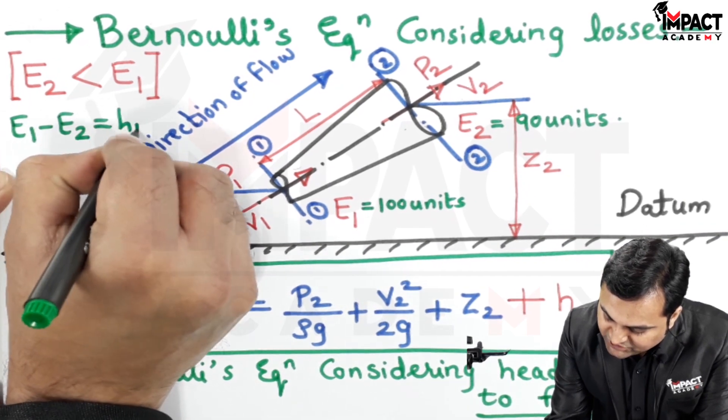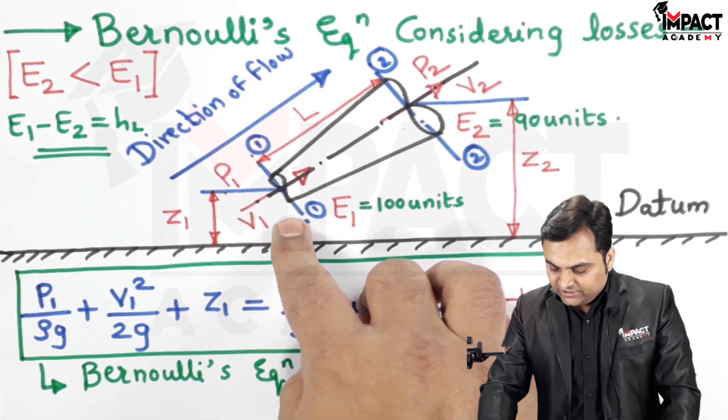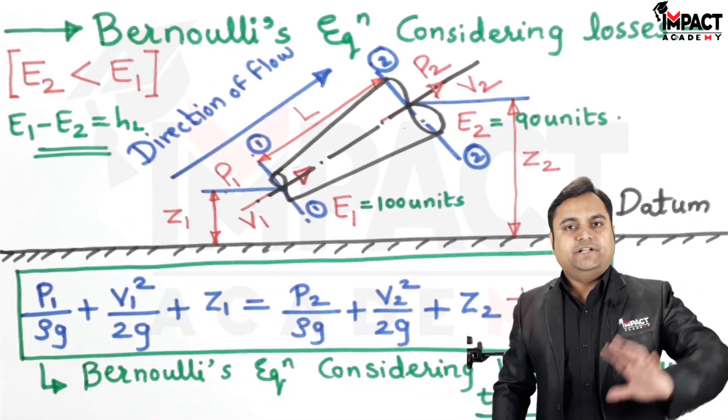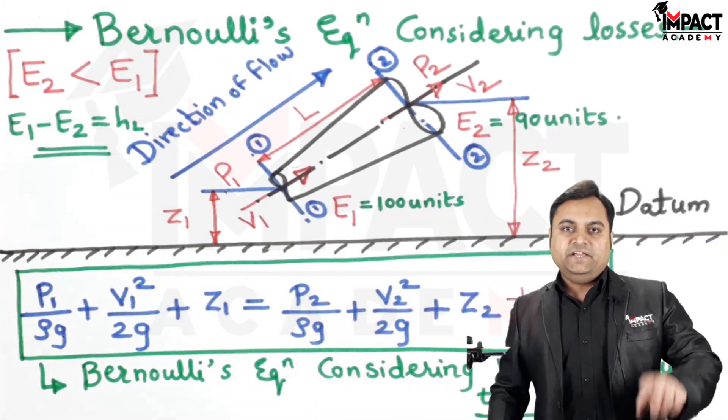And again, it is not compulsory that energy at section 1 would be greater always. It can even be the case like E2 can be greater. In that case, E2 minus E1 would give us the head loss due to friction.